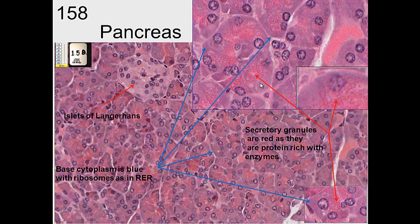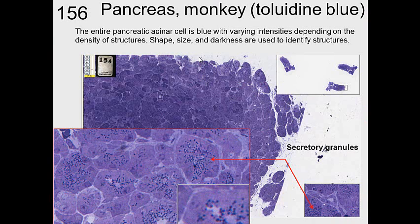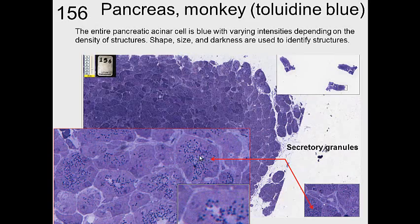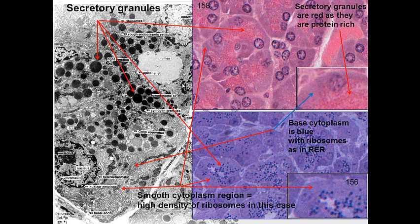The secretory granules are red because they are protein-rich enzymes staining with eosin. The basal portion of the cell is blue due to the high density of ribosomes in the rough endoplasmic reticulum. If it's more acidic - as in ribosomes and the nucleus - it stains blue; if more proteinaceous, it stains red. With toluidine blue, everything is blue and you must judge by varying intensities, shape, size, and darkness to distinguish components, rather than by color contrast as in H&E.